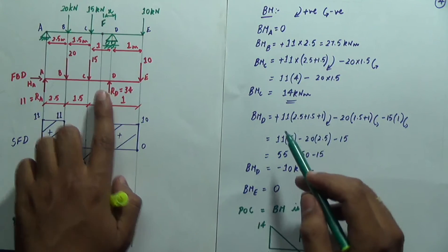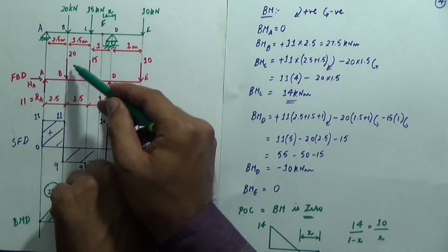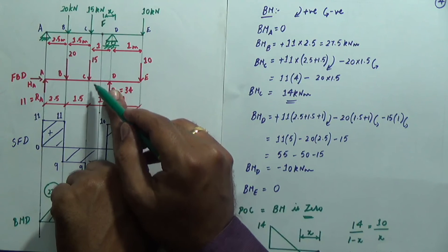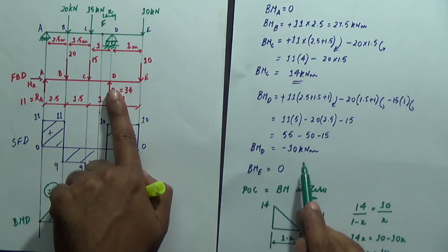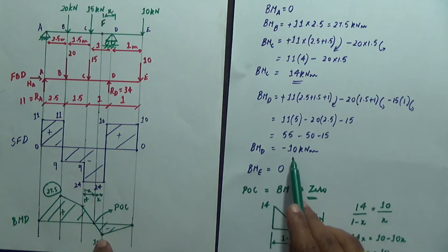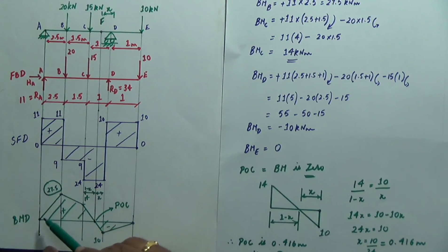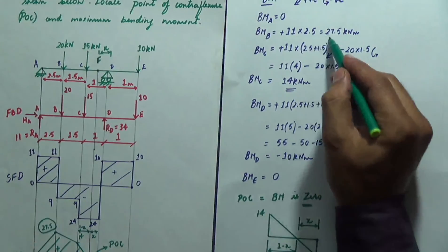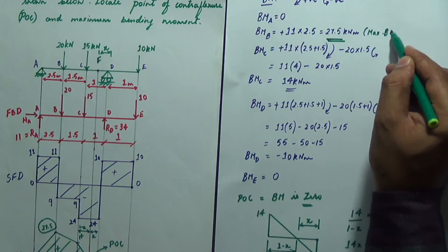Bending moment at D = 11 × (2.5 + 1.5 + 1) − 20 × (1.5 + 1) − 15 × 1, simplifying gives −10 kNm. Bending moment at E = 0. Plotting the bending moment diagram, the maximum bending moment is 27.5 kNm at B. If you miss writing it explicitly, circling it on the diagram is also acceptable.